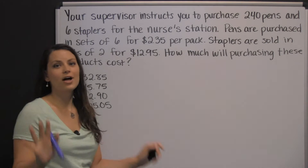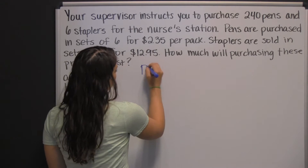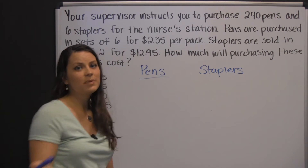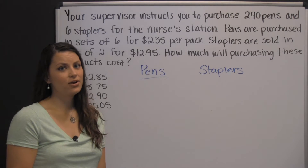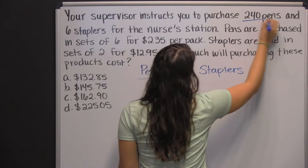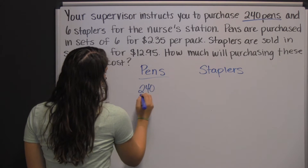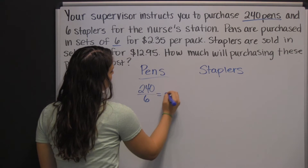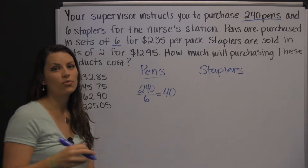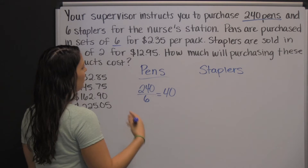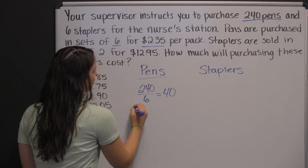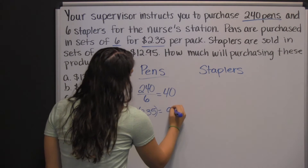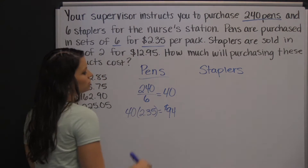First, let's break it up, because there's a lot of information going on here. Let's separate this into our pens and our staplers. You can't just buy these pens individually, so first let's figure out how many packs we're going to have to buy. We need 240 pens, but we're going to buy them in packs of 6. So, 240 divided by 6 means we're going to end up needing 40 packs of pens. We have to buy 40 packs of pens, and each one costs $2.35. So, 40 packs times $2.35 means we're going to spend $94 just on our pens.